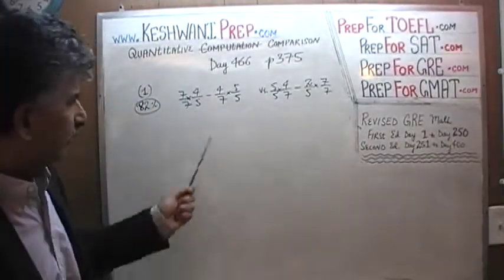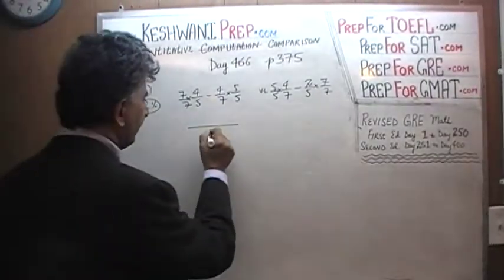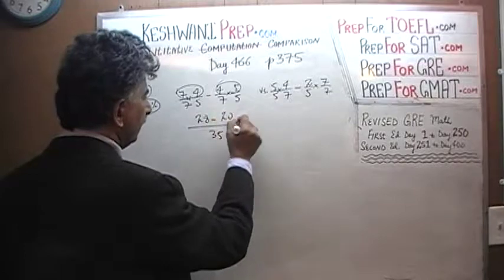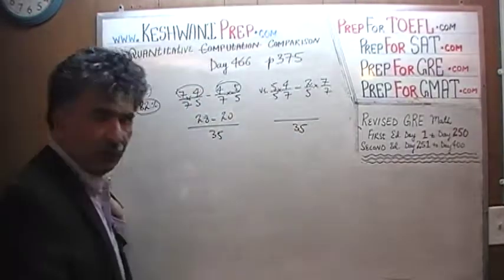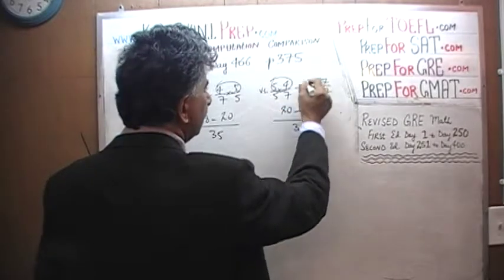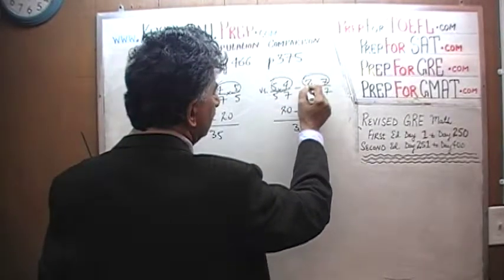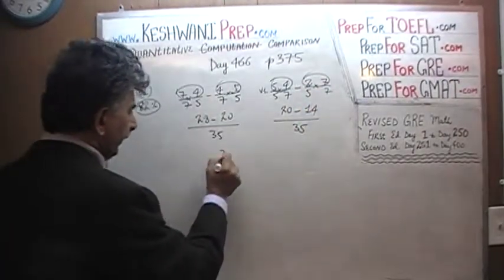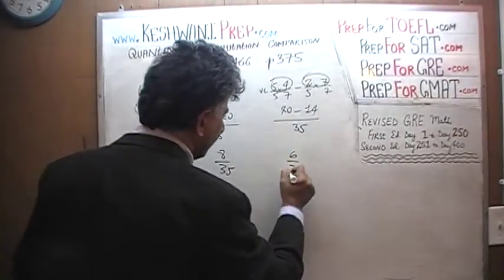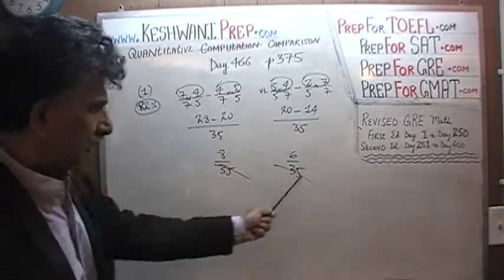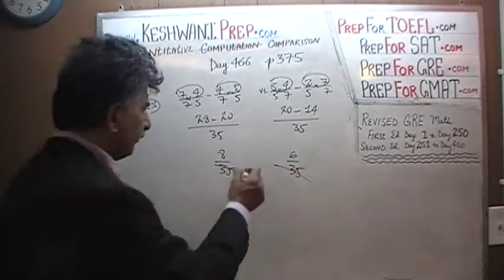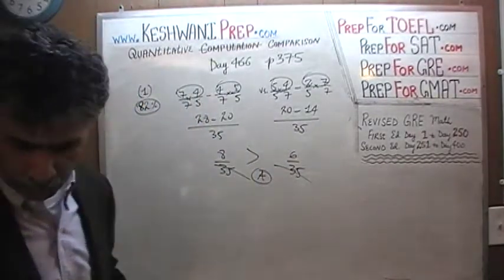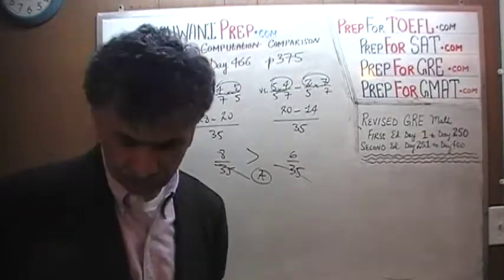We have 28/35 minus 20/35 versus 20/35 minus 14/35. That gives us 8/35 versus 6/35. Multiply both columns by 35 and we're done — 8 is of course greater than 6. The answer is A. There is one more way to do this problem, but let's keep going.